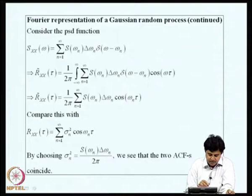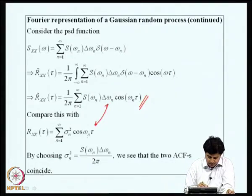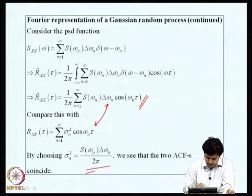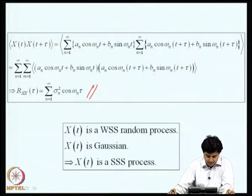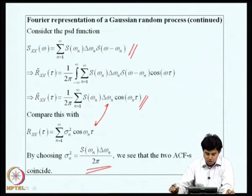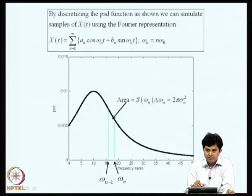If we start with a power spectral density function made up of a set of Dirac delta functions and compute its auto-covariance, we can compare this with the auto-covariance of the Fourier series signal and show that the two agree if sigma_n^2 is chosen appropriately. This means the process has a PSD of this discrete form. So, if we are given a continuous PSD and discretize it into a few discrete frequencies, we can represent a Gaussian random process in terms of a Fourier series with random amplitudes — a result we will use shortly.